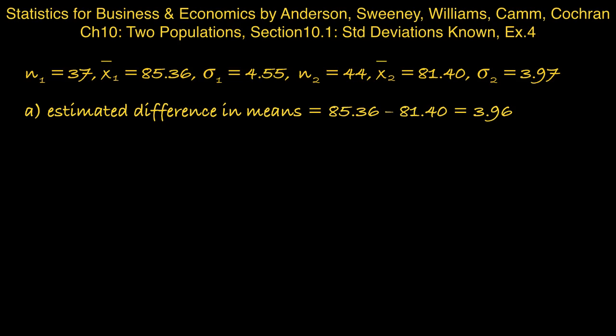Part B: At 95% confidence, what is the margin of error? So for 95% confidence, we'll need the 97.5th percentile of a normal distribution, which is 1.96. And then if we plug the values into the formula, we get 1.88 as the margin of error.